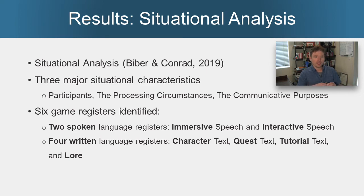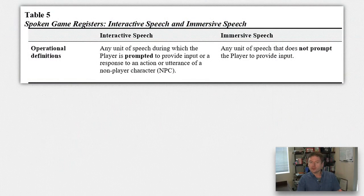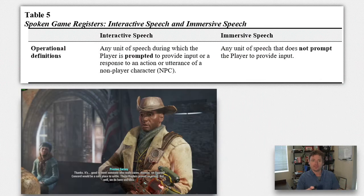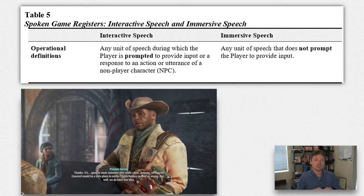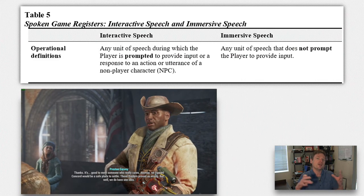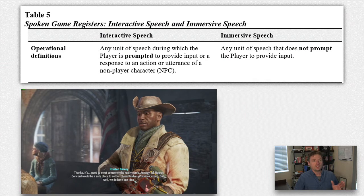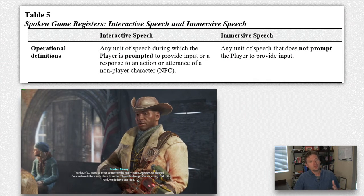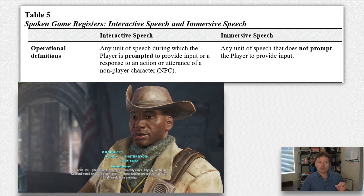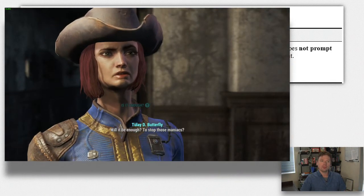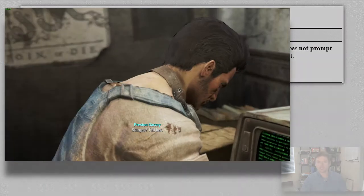The two spoken language registers are referred to as immersive speech and interactive speech. The four written language registers in the games are referred to as character text, quest text, tutorial text, and lore. These were identified according to the different ways in which speech was used. There seem to be two major categories of speech in these games. Interactive speech is any unit of speech during which the player is prompted to provide input or a response to an action or utterance of a non-player character, or NPC — the automated characters in the game.